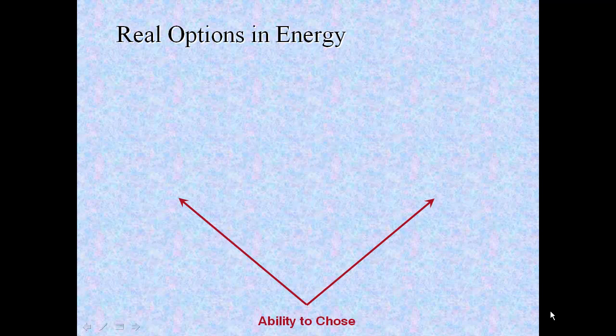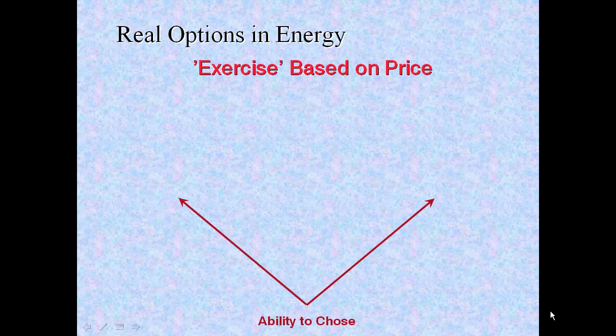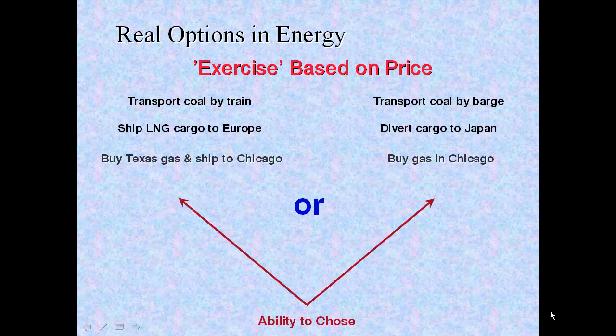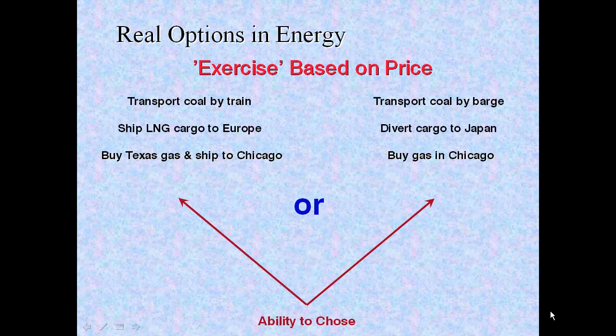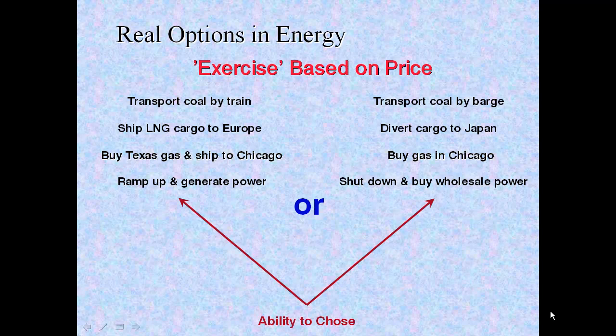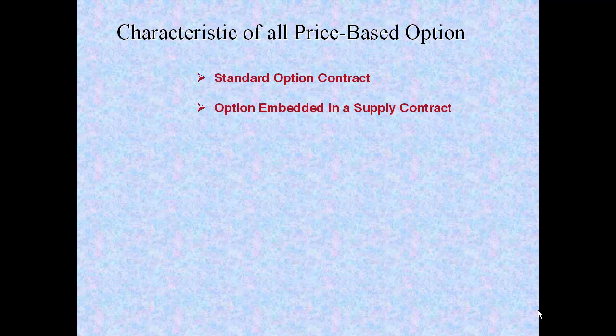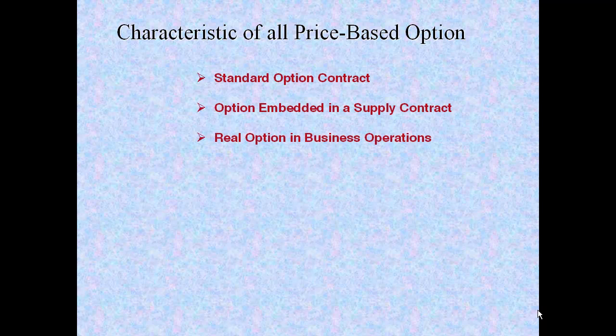Our focus here is on real options in the energy sector in which the decision to exercise, that is to choose A or B, will be based on a market price. Examples include transport coal by train or transport coal by barge, ship an LNG cargo to Europe or divert that cargo and send it to Japan, buy Texas gas and then ship it to Chicago or simply buy gas in Chicago, ramp up and generate power or shut down the generator and buy wholesale power. But regardless of what form a price-based option takes, be it an explicit put or call option contract, or an option embedded in a supply contract, or as a real option in business operations, they'll all have this one common characteristic: a plot of its payout will be asymmetrical.